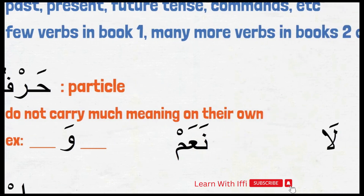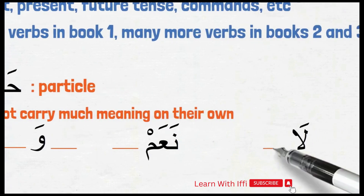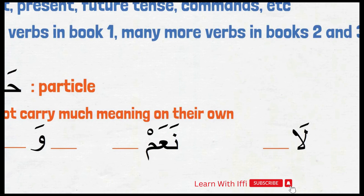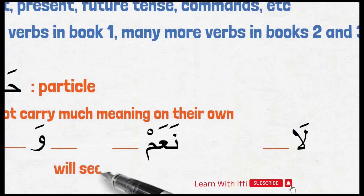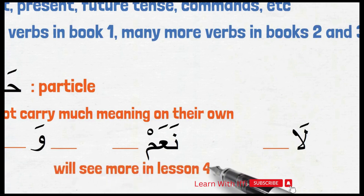Similarly, with naam and la — yes and no — we have to look at the context to figure out what naam and la are really referring to. So they do not give a complete meaning on their own. These words have to come with other words to give a complete meaning. We will start learning a lot more words of type harf in the next lesson, lesson 4, and you will get to know them better when you see more of them insha'Allah.